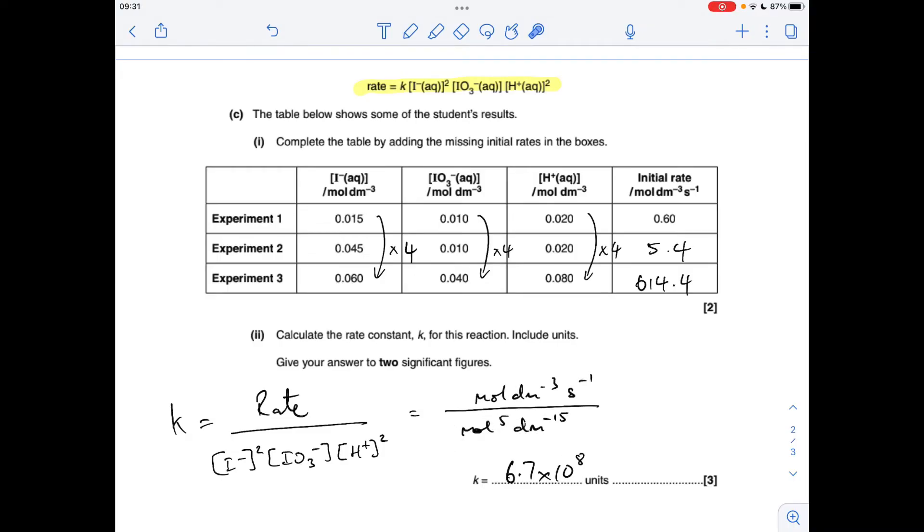Now, I think these have got to be the trickiest units I've ever seen in all the exam questions on rates that I've covered. So all I'm doing is putting the units of the terms in the K expression in. So we've got the unit of rate on the top, and we've effectively got five lots of moles per decimeter cubed on the bottom, which gives us mole to the 5, dm to the minus 15. So now we cancel.